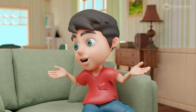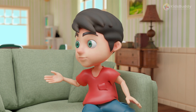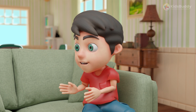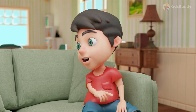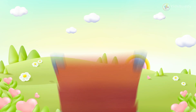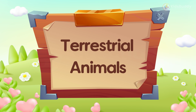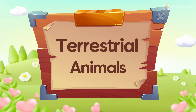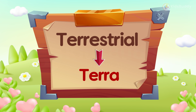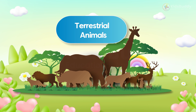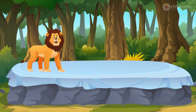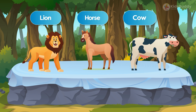Different types of animals are found in various habitats on Earth. Let us check them in detail. We can start with terrestrial animals. The word 'terrestrial' has derived from the Latin 'terra,' which means earth or land. Those animals that live on land are known as terrestrial animals. Some examples are lions, horses, cows, and so on.